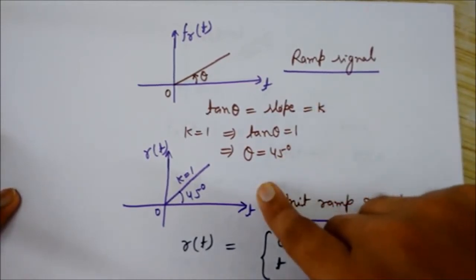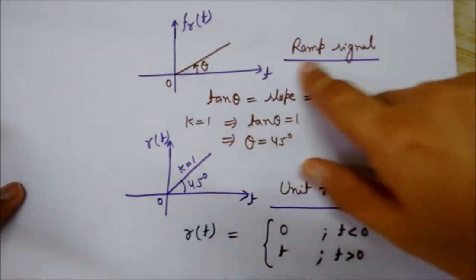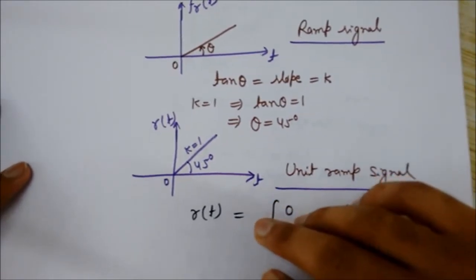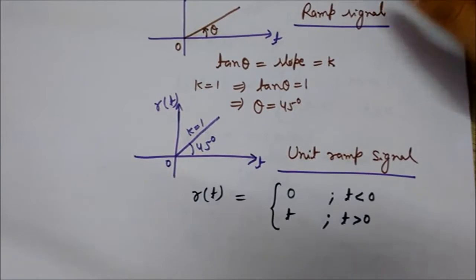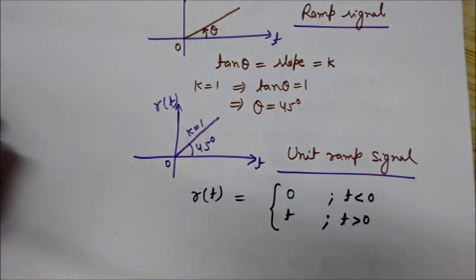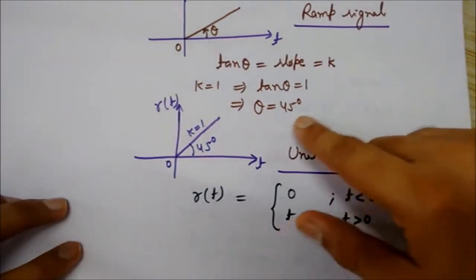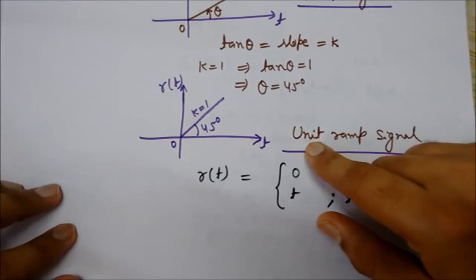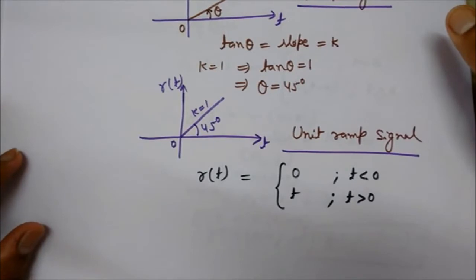We denote this slope by k, as in the mathematical expression where k was the slope of the curve. If we take the value of k equal to 1, then the slope equals 1, so tan theta equals 1, which gives theta equal to 45 degrees. In this case, when k equals 1, we say that it is the unit ramp signal.